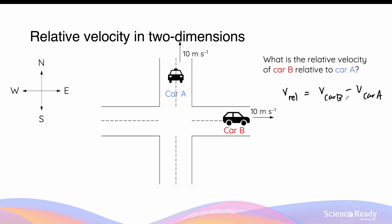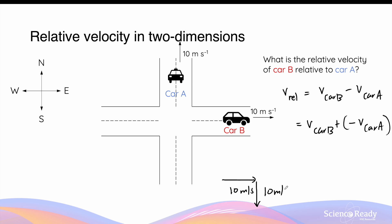This is where we need to apply vector subtraction. This equation can be written as the velocity of Car B plus the negative velocity vector of Car A. The velocity vector of Car B is heading to the right at 10 meters per second, and the negative velocity vector of Car A is heading towards the south at 10 meters per second, since its original vector is heading towards the north. To find a negative vector, we simply reverse the direction while keeping the magnitude the same. When adding vectors, we join the tail of one vector to the head of the other, such that it becomes the hypotenuse of a right angle triangle. This hypotenuse is the relative velocity, equal to the velocity of Car B plus the negative velocity vector of Car A.